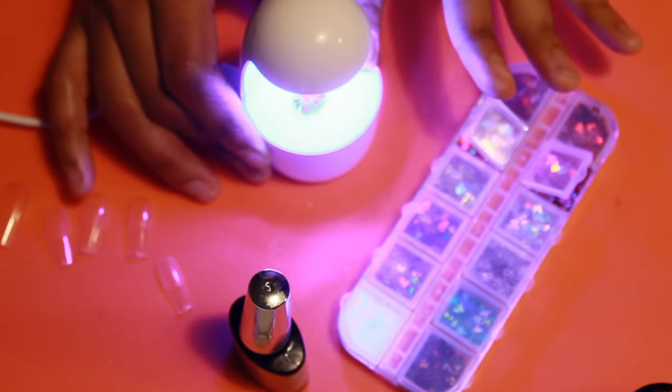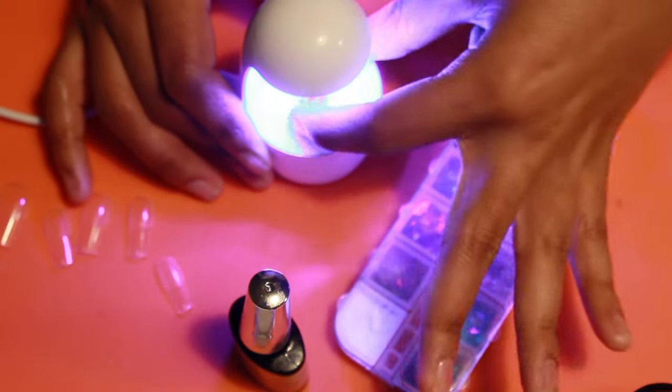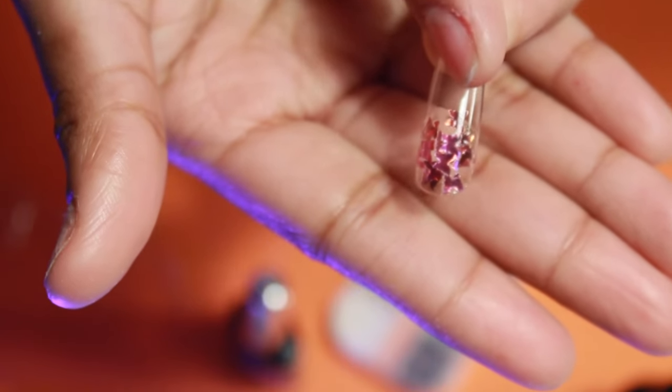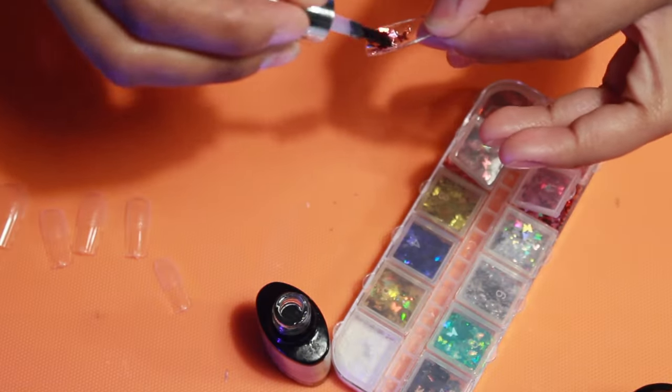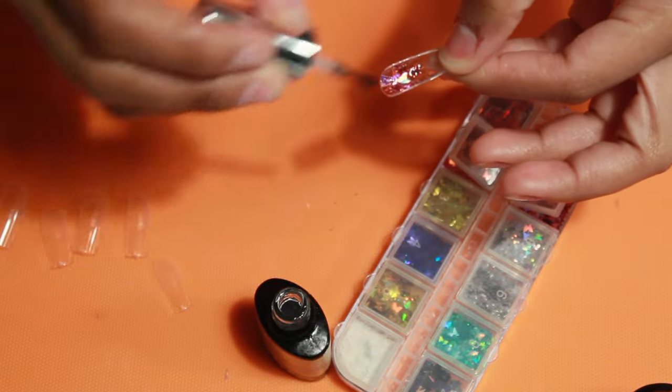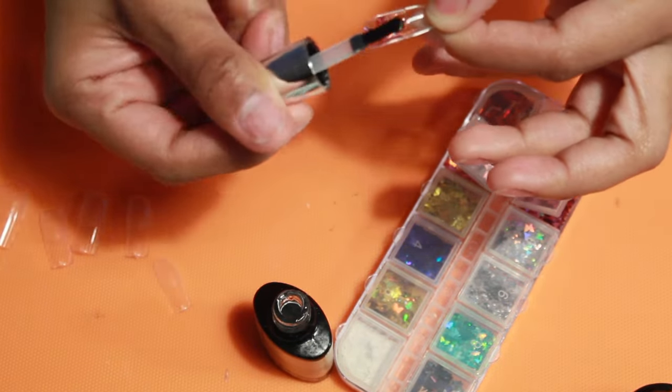And then I stuck it in the lamp so that it could set. Once it's set, I did go in with more base coat so that I can apply it to my actual nail and it could lay as flat as possible using basically the gel X method.